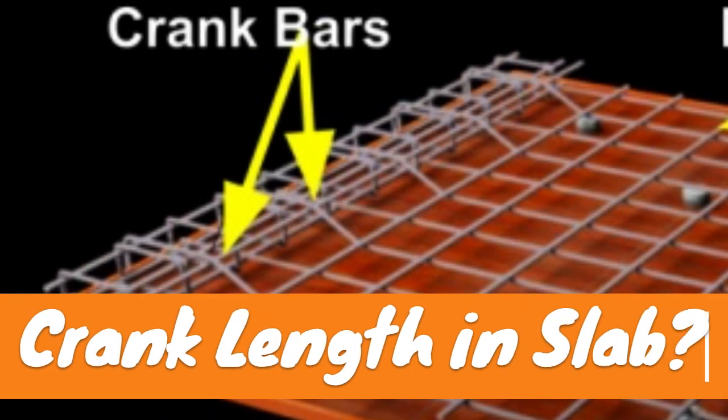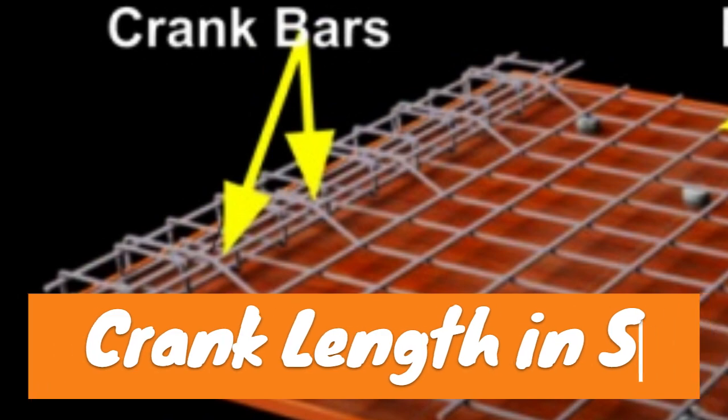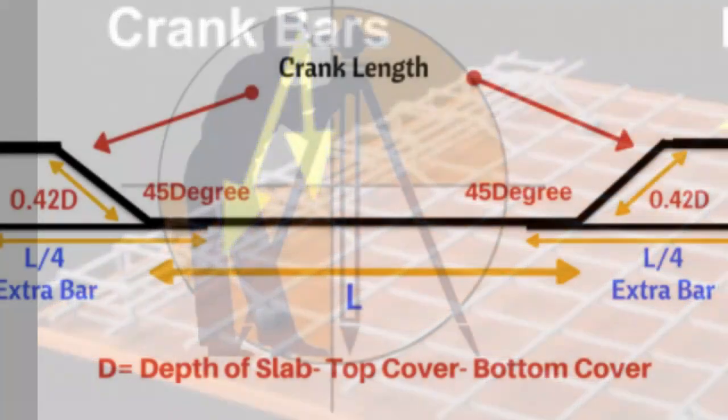Question 4. What is a crank length in the slab? Answer: The crank length in a slab is 0.42d, where d is the effective depth of the slab.